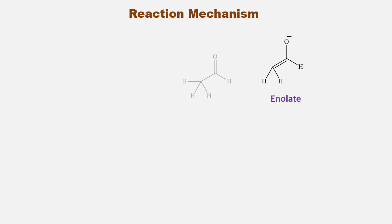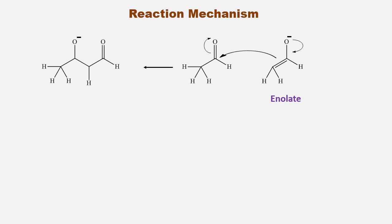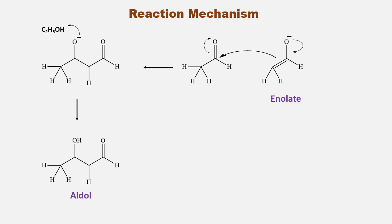Enolates are quite nucleophilic in nature, and hence this enolate ion attacks the electrophilic carbonyl carbon of the next acetaldehyde molecule, forming an intermediate product in which oxygen carries a negative charge. This oxygen then takes one proton from the solvent ethanol to form the aldol product. From the aldol product, hydrogen from the alpha position and the hydroxy group from the beta position are removed in a concerted manner to form the final product of the aldol condensation reaction — the alpha-beta unsaturated aldehyde.